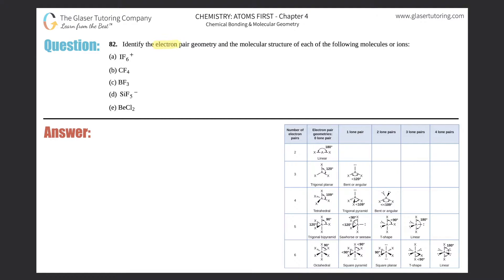Number 82: identify the electron pair geometry and the molecular structure of each of the following molecules or ions, parts A through E. We did a very similar question in number 81, so if you want a more in-depth version go back to that one. This will be a quick run-through because there's a lot to cover. First thing: if you want to find electron pair geometry or molecular structure, you need to know how to draw Lewis structures. If you don't, go back to question 40 of this chapter.